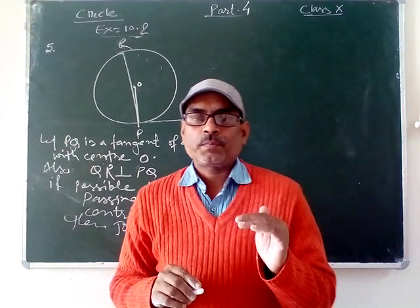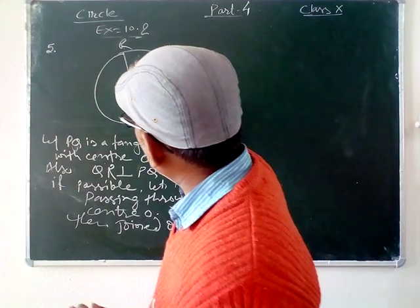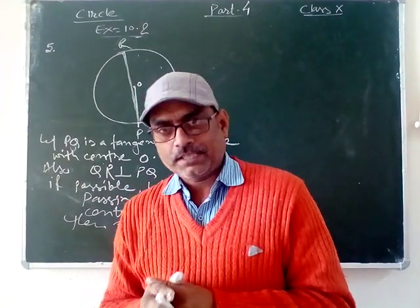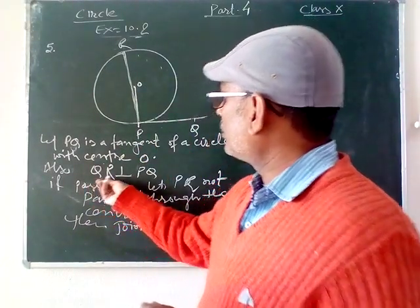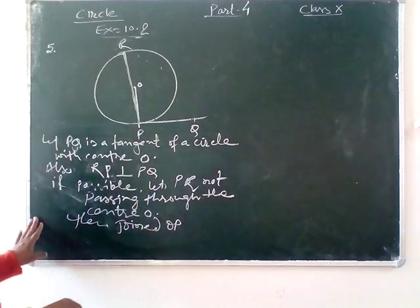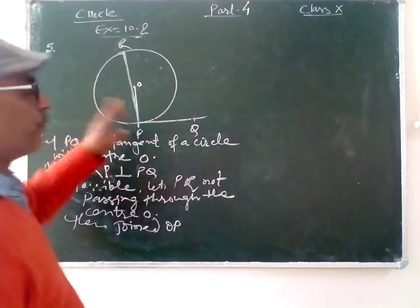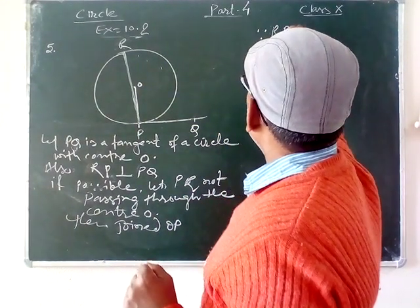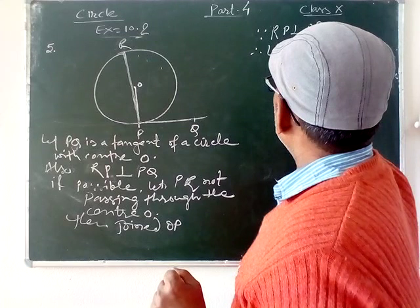We have to introduce point O. Now since RP is perpendicular to PQ, angle RPQ equals 90 degrees.